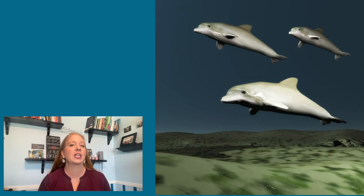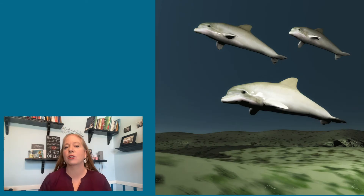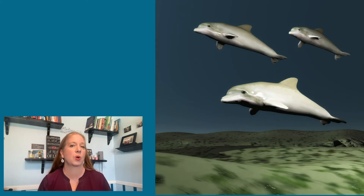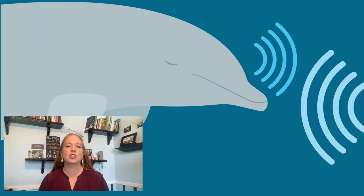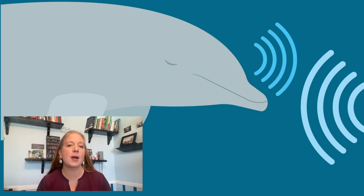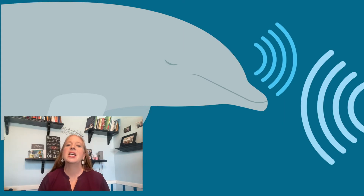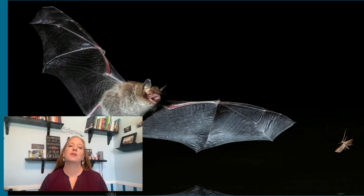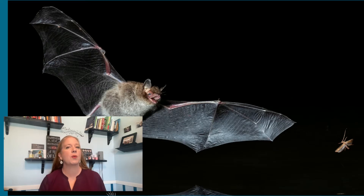Animals like dolphins, whales, and bats use the echoes from sound waves to understand the world around them. They send out high-pitched sounds, and when those sounds hit objects, they reflect back to them. This allows them to figure out the object's distance, direction, speed, and size.